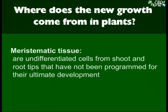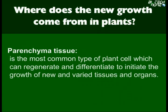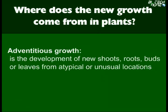Meristematic tissues are undifferentiated cells from shoot and root tips that have not been programmed for their ultimate development. Parenchyma tissues are the most common type of plant cells, which can regenerate and differentiate to initiate the growth of new and varied tissues and organs. Adventitious growth is the development of new shoots, roots, buds, or leaves from atypical or unusual locations.